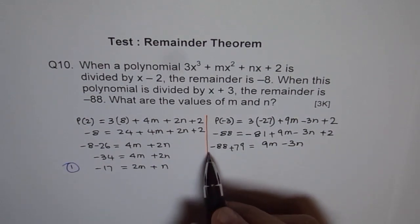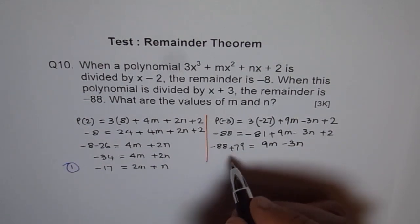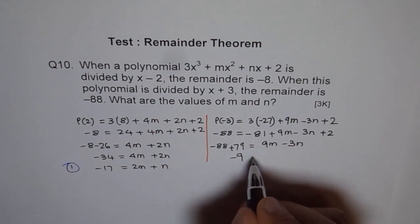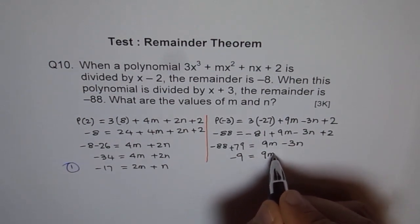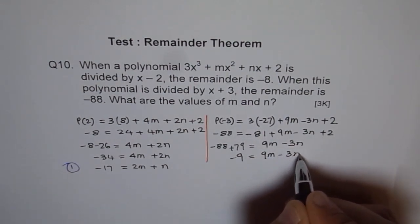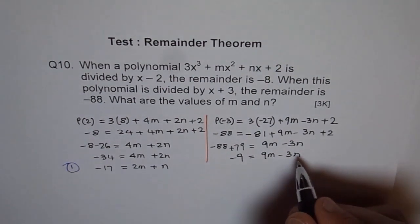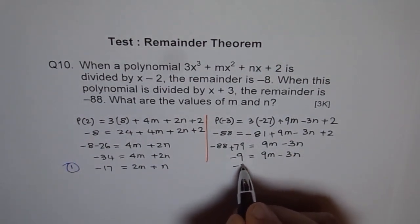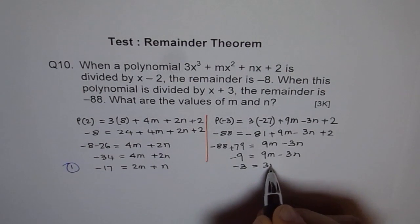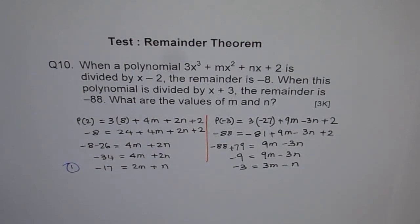So we will say -88 and this is plus 79 equals 9m - 3n. When you do this, it is -9 equals 9m - 3n. We can divide by 3 this time. This -3 equals 3m - n. So that's what we get. Let's call this equation 2.